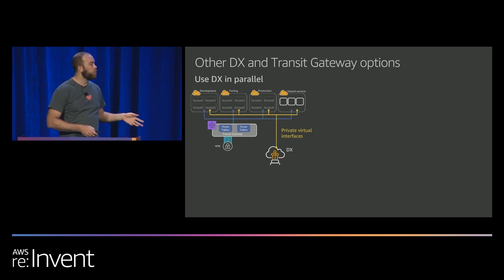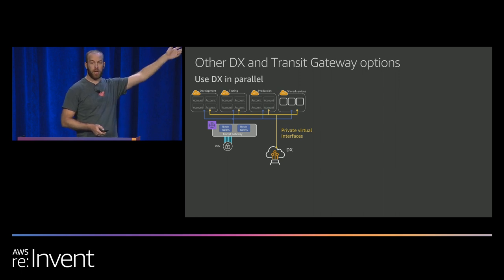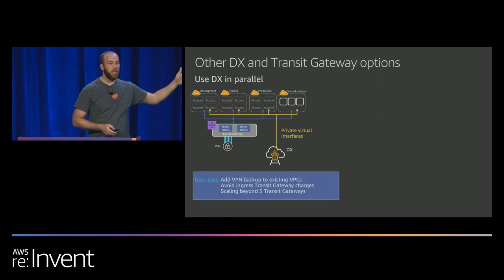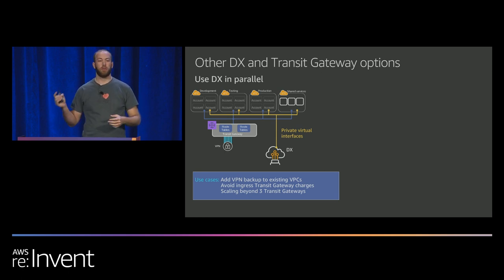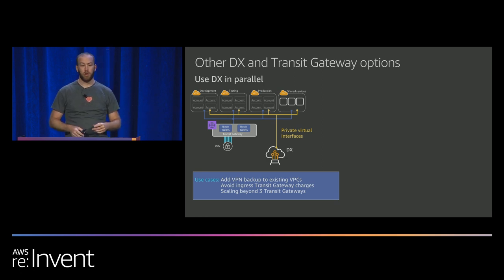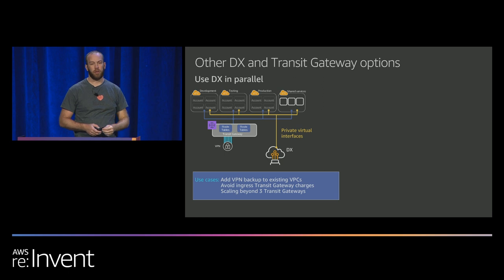If you already have Direct Connect working and don't have problems, but want to add VPN as backup, you can continue using Direct Connect as-is and just add VPN as backup — good for encryption or VPN backup. Whenever you send traffic from on-premises into Transit Gateway, there's a two-cent ingress charge. If you're sending lots of traffic, you may want Direct Connect communication to those VPCs with heavier traffic to reduce data transfer charges.